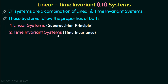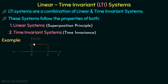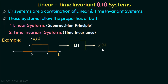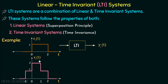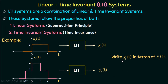Let's understand this with the help of an example. x1(t) is a function having a rectangular waveform from 0 to 2, given as input to the LTI system, and its response is y1(t). x2(t) is another function with a different waveform given to the same LTI system, producing response y2(t). We need to write y2(t) in terms of y1(t), finding the relationship between the two responses.